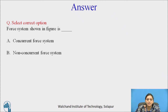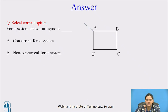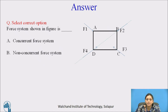Here is the answer. The force system is given as a rectangle having four corners A, B, C, and D. At each corner A, B, C, and D, one force is acting. So initially it looks like a non-concurrent force system, but after extending the line of action of all the forces, we find that all the forces are meeting at one point — at the center of the rectangle — so it is a concurrent force system.